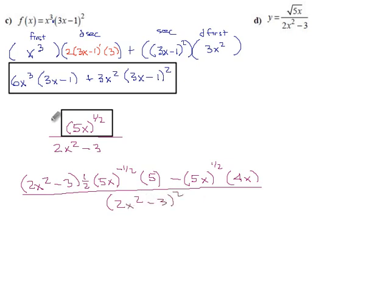I don't think we can do a ton to clean this up, but let's try at least a little bit. We have 1 half times 5, and then we have 5x to the minus 1 half and 2x squared minus 3. That's all for the first term.